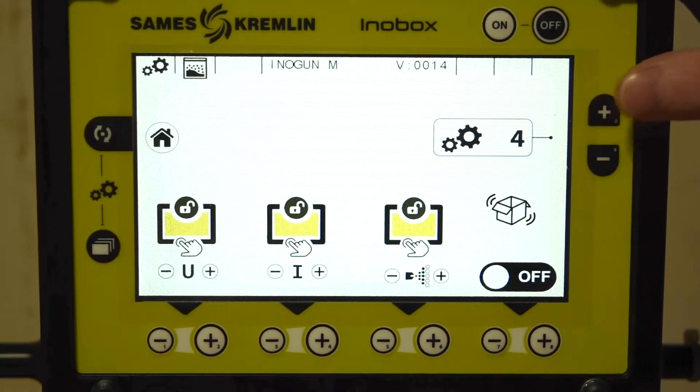On this screen, you can lock out the KV, amperage, and injection settings to prevent them from being adjusted. You can also toggle the box feed motor.